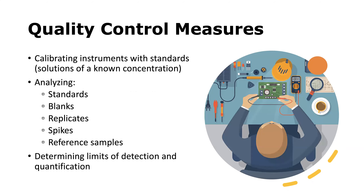Some examples of quality control measures include calibrating instruments using standards — solutions that have a known concentration of a constituent — and the analysis of standards, blanks, sample replicates, spikes, and reference samples. We can have different types of blanks, such as a field blank, a laboratory blank, or an instrument blank. Replicates can be field replicates or laboratory replicates. We also include within quality control the determination of limits of detection and quantification.